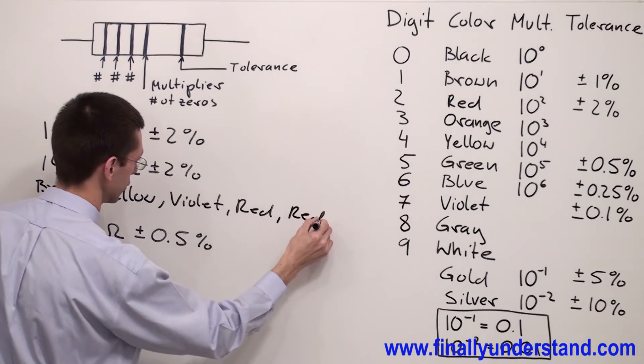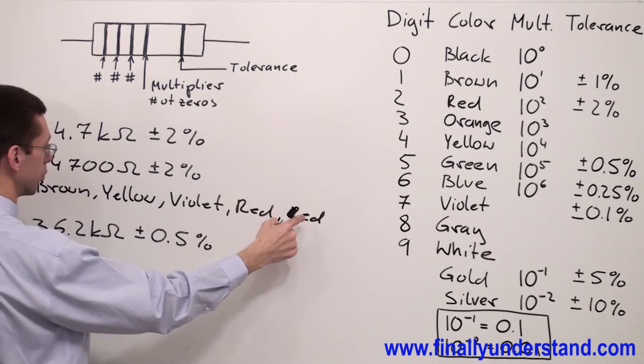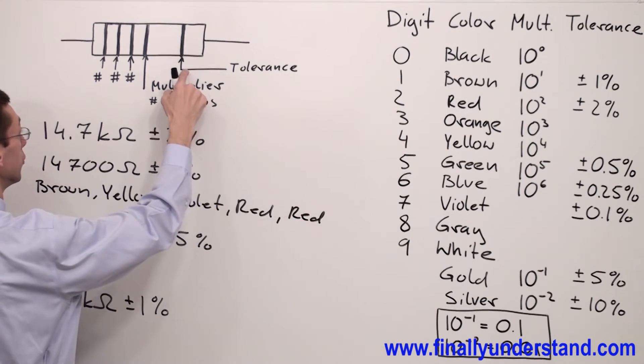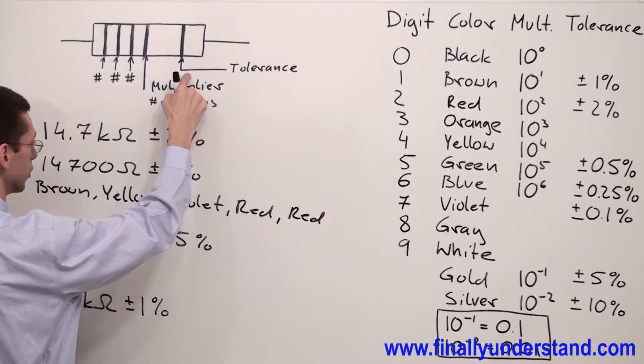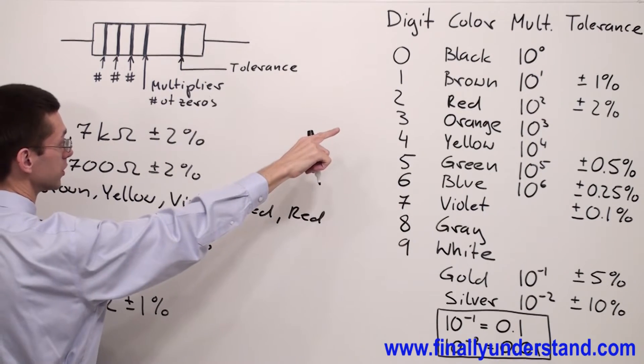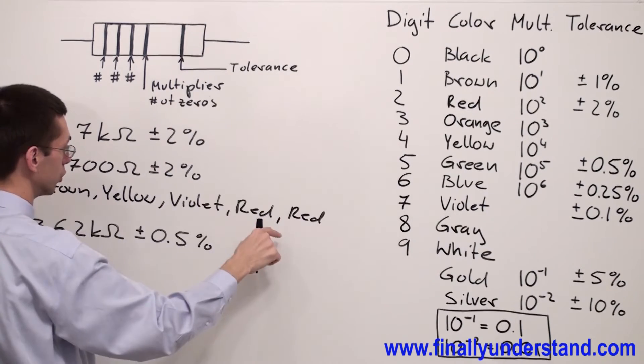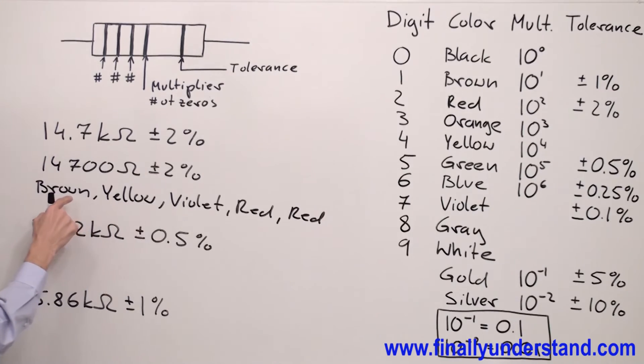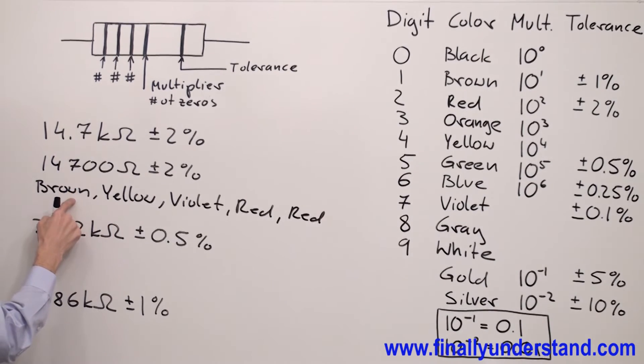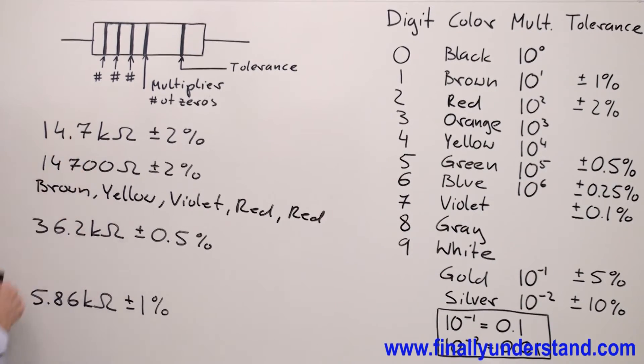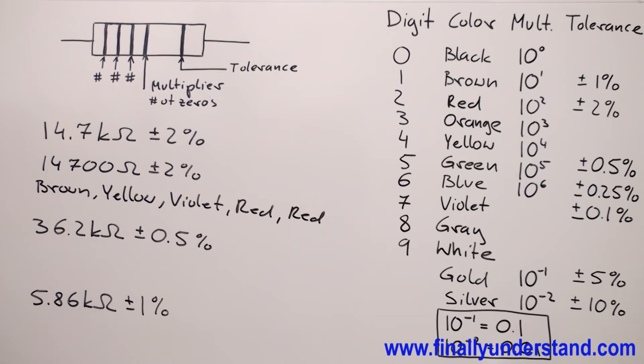And the tolerance is 2%, also red. Remember, red at the fifth position is my tolerance and represents tolerance plus minus 2%. That's why this is the color code for this resistance. Let's take a look at the second example.